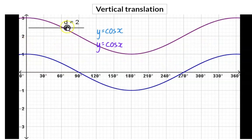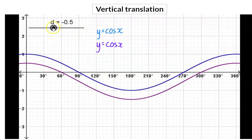As this value keeps increasing, the graph still moves up and in this case, it moved up two units. This constant value can also be negative.